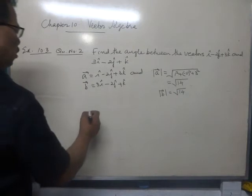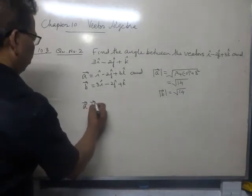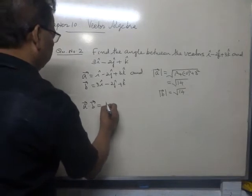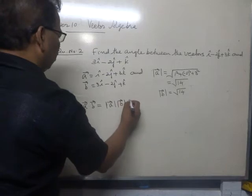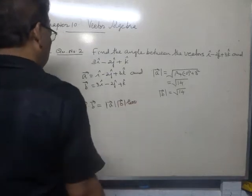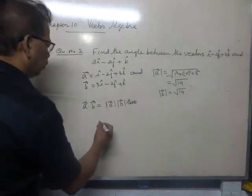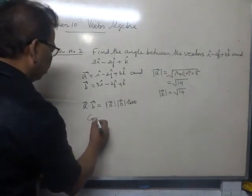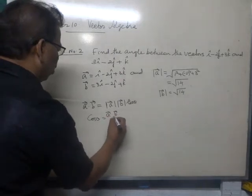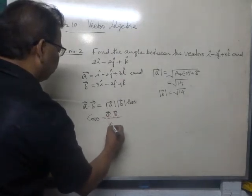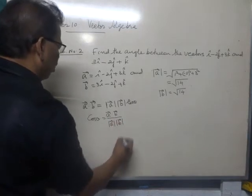Now, a dot b is equal to modulus a, modulus b cos theta. Therefore, cos theta is equal to a dot b divided by modulus a, modulus b.